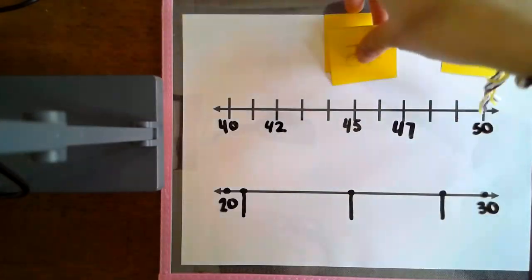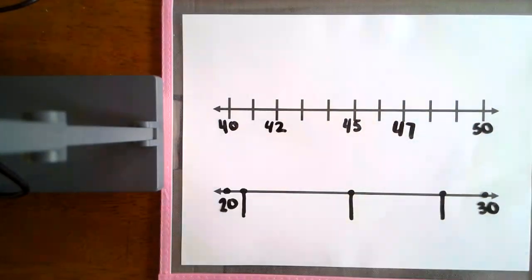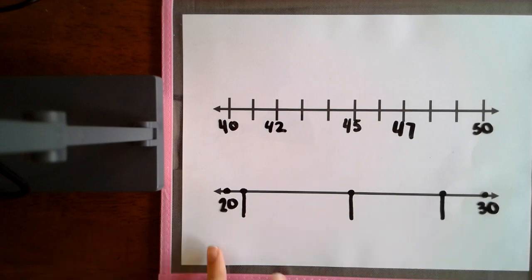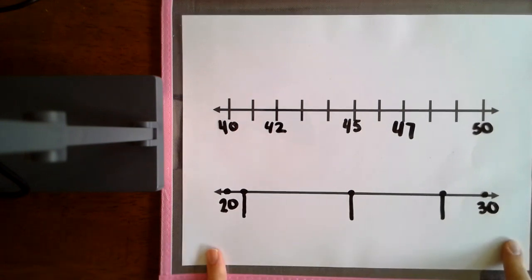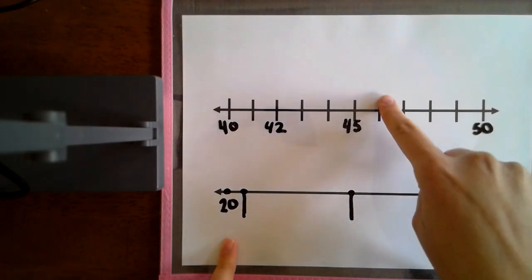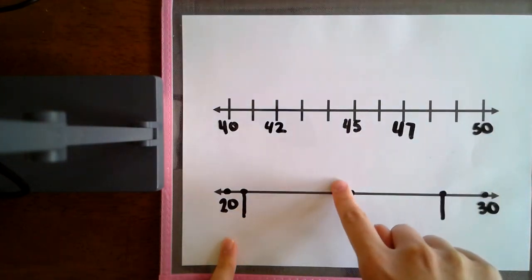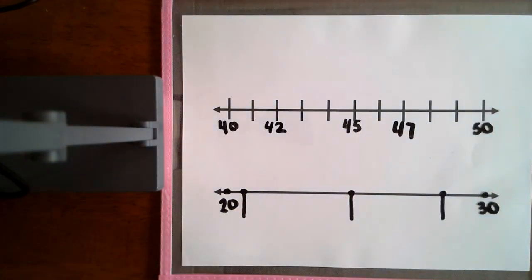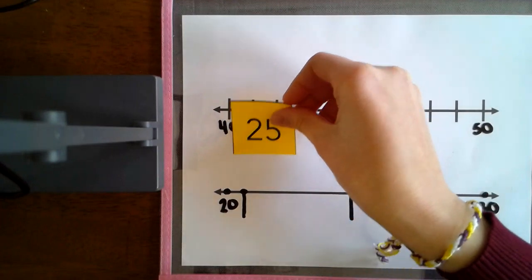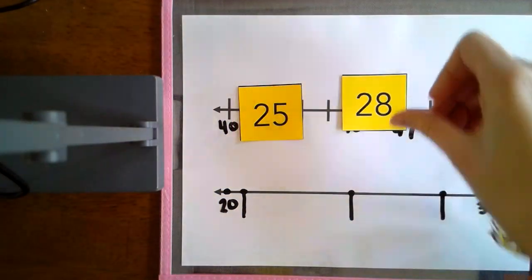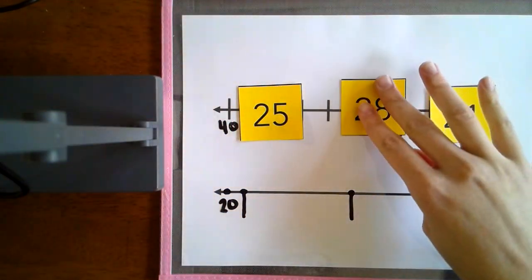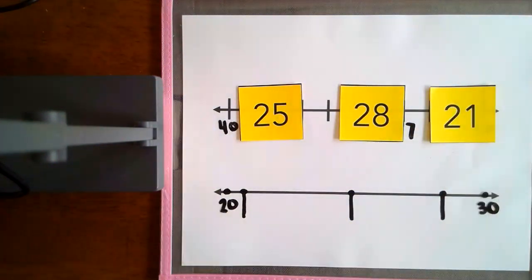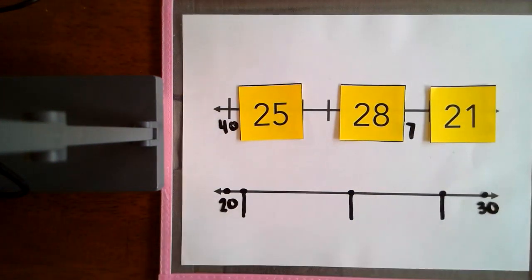The number line shows the numbers in order. Now we're going to try this one down here. You'll notice that this number line doesn't have each of the individual lines, so we can't count by one. We will actually have to estimate the position for the next three numbers. Our next three numbers are 25, 28, and 21.